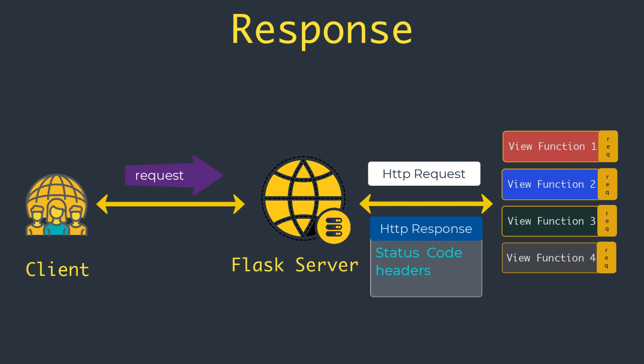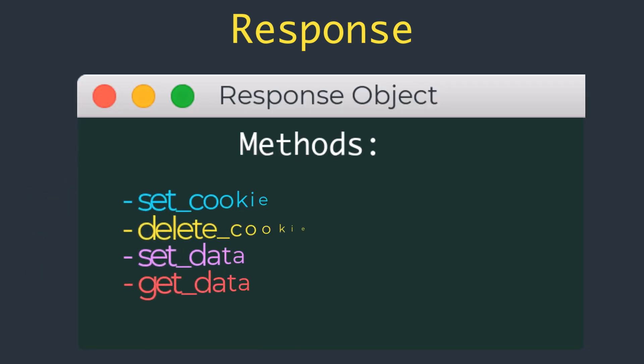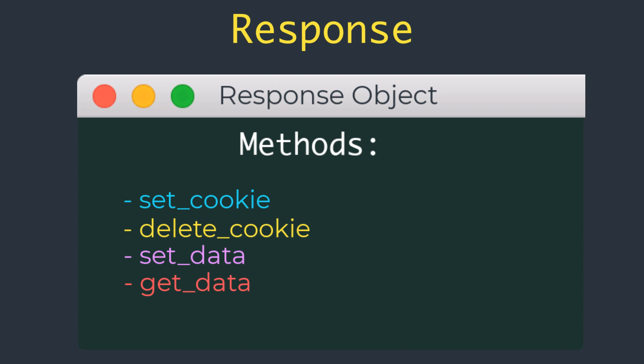Responses returned by view functions can also take a third argument — a dictionary of headers added to the HTTP response. Instead of returning one, two, or three values as a tuple, Flask view functions have the option of returning a response object. The make_response() function takes one, two, or three arguments — the same values that can be returned from a view function — and returns an equivalent response object. Some methods available on the response object are: set_cookie(), which adds a cookie to the response; delete_cookie(), which removes a cookie; set_data(), which sets the response body as a string or bytes; and get_data(), which retrieves the response body.